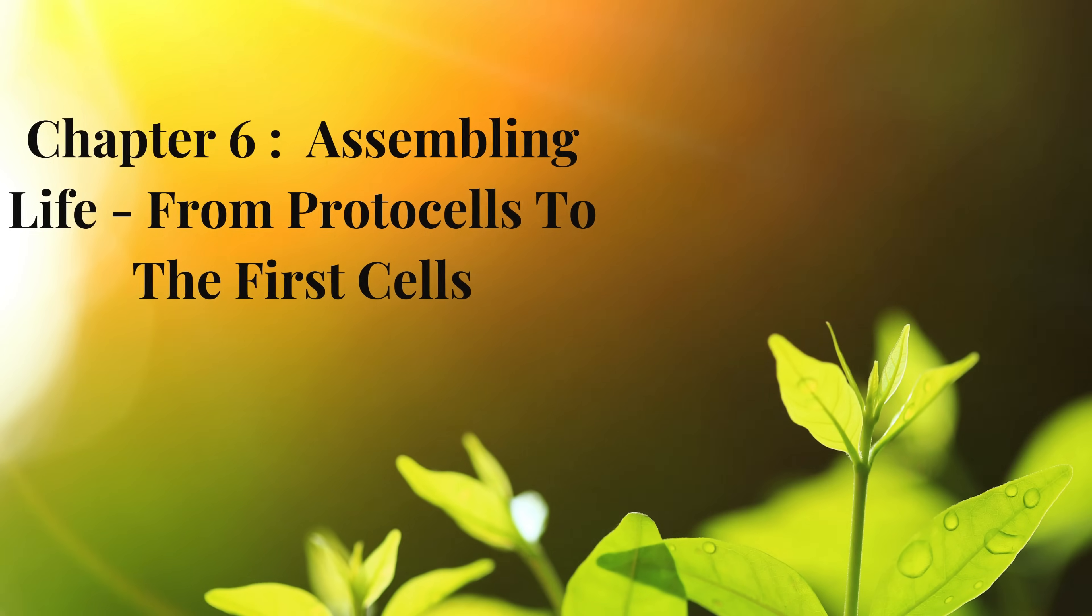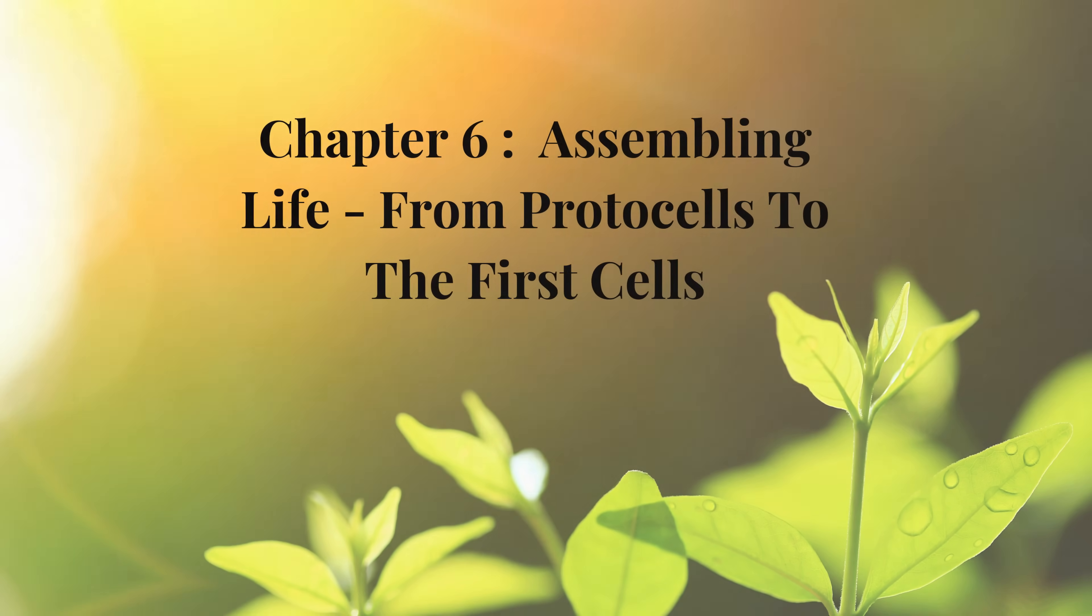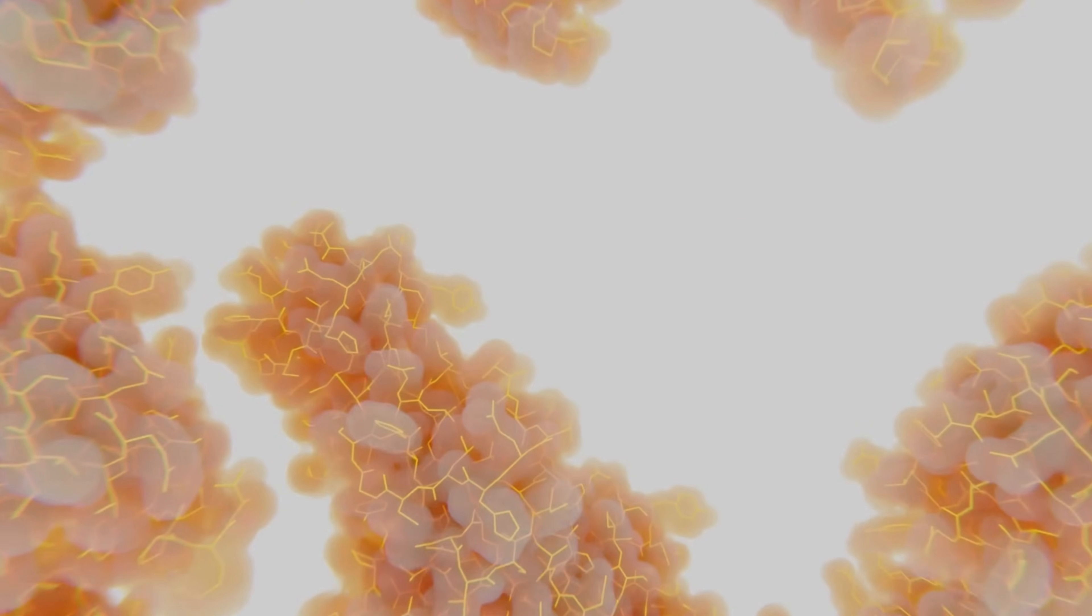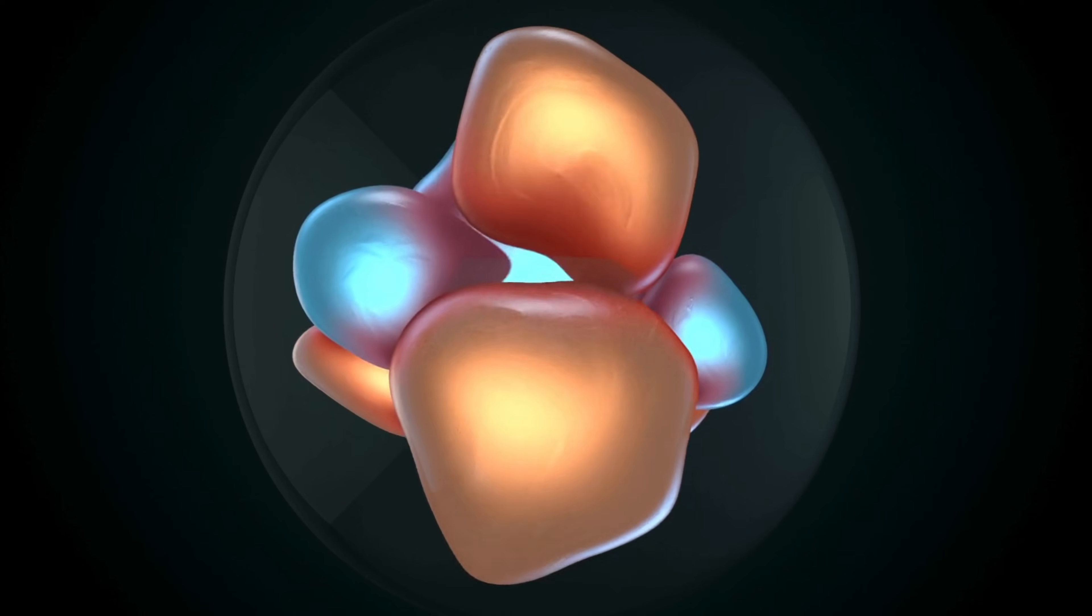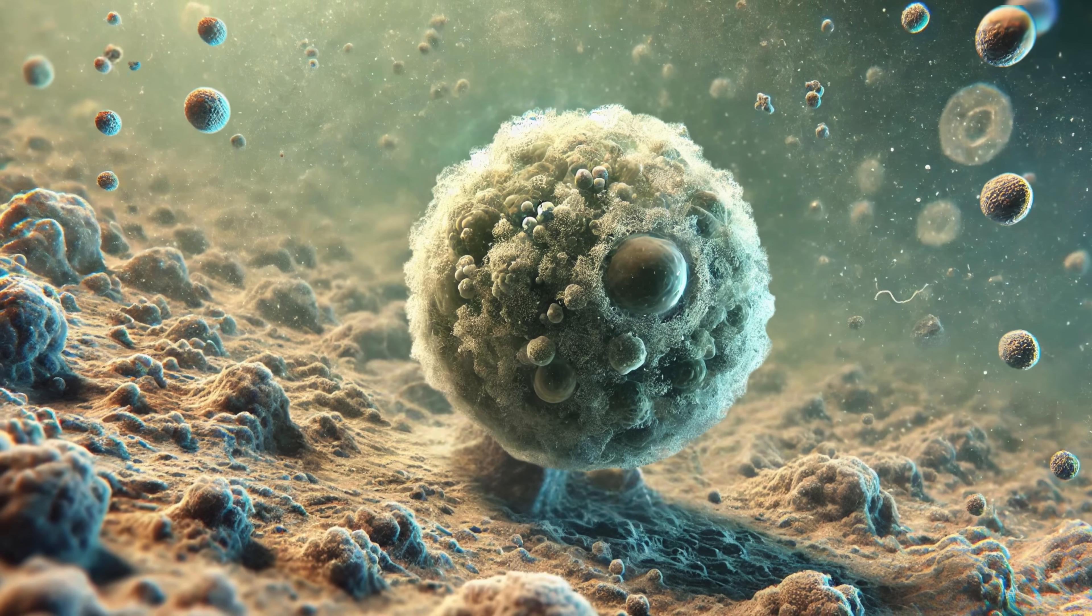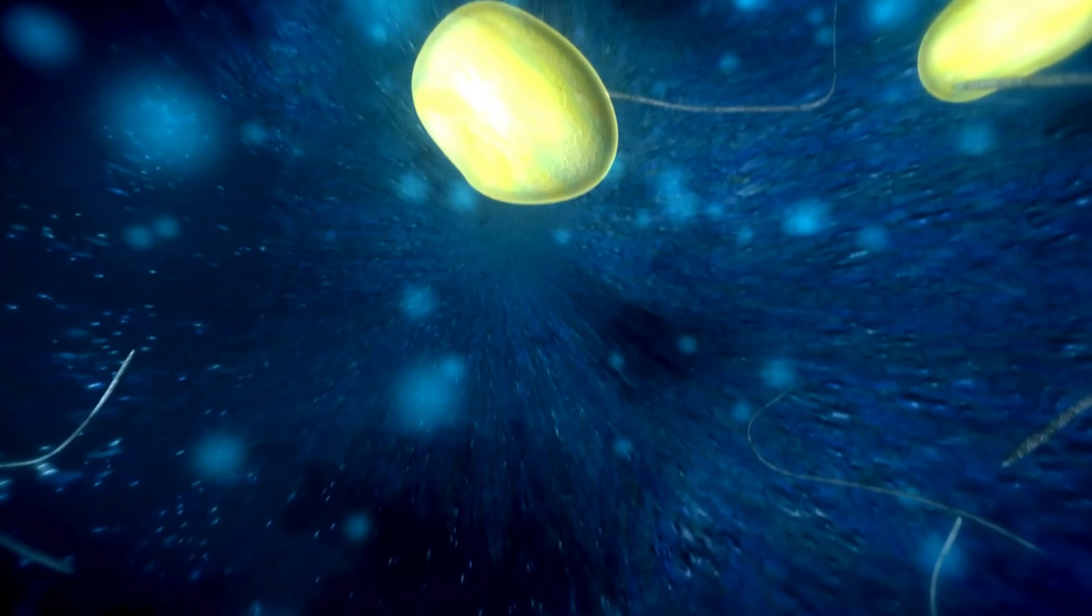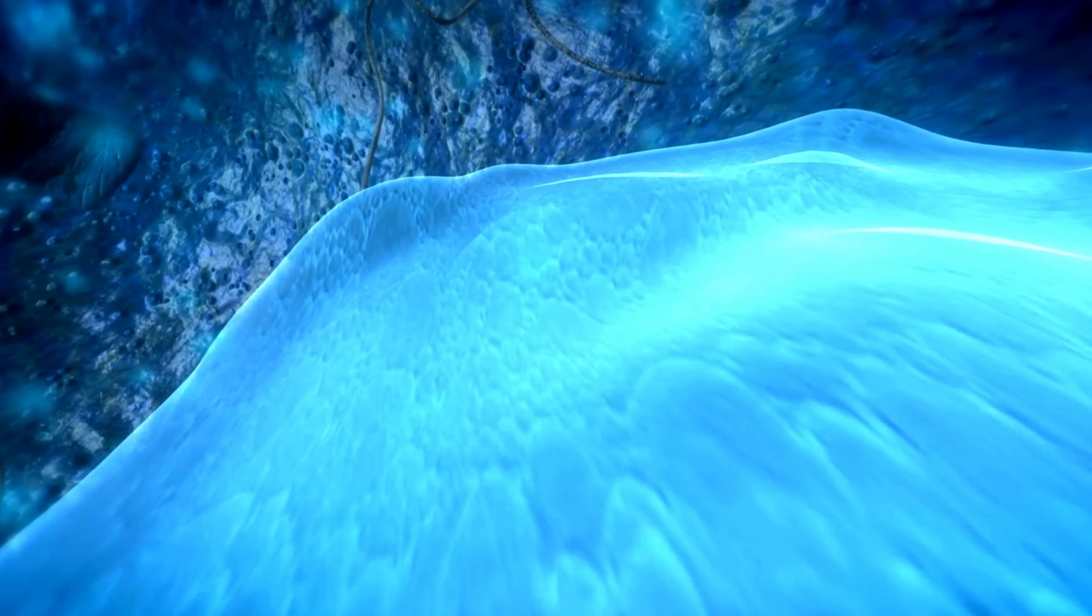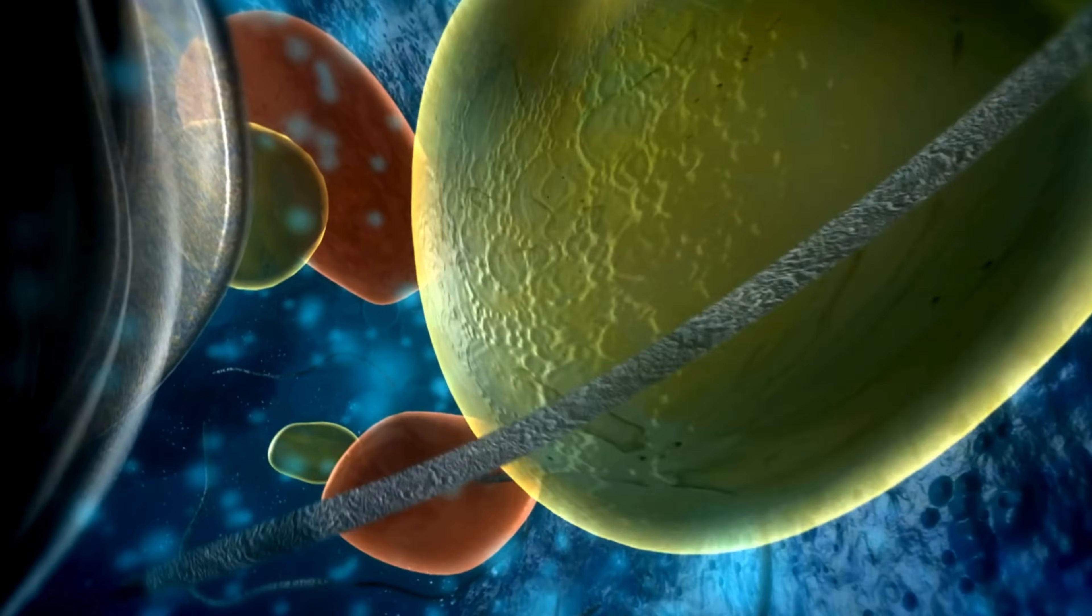Chapter 6: Assembling Life - From Protocells to the First Cells. Now that we have some theories about how molecules formed, let's take it a step further. How did these molecules come together to create a living cell? One possible step in this journey was the formation of protocells, tiny structures that could hold molecules together and create a separate internal environment. Protocells likely had simple membranes, which are layers that protect and separate the inside of a cell from the outside world. These membranes could have been formed from fatty molecules, which naturally form bubbles in water.